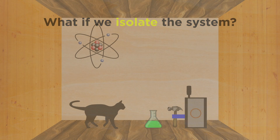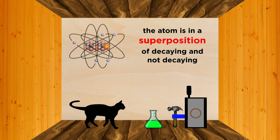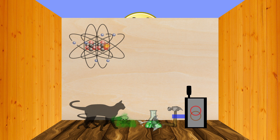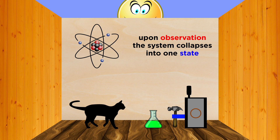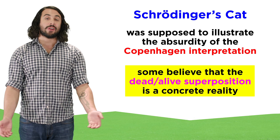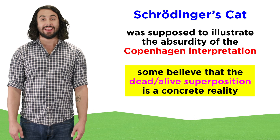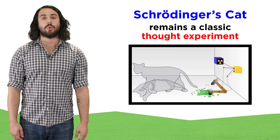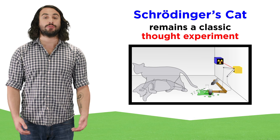The problem arises when we isolate this system from observation. According to the Copenhagen interpretation, the atom is in a superposition of decaying and not decaying, which seems pretty abstract and harmless, but because of the mechanism in the box, that means that the cat must be in a superposition of dead and alive. Only once you open the box and look inside will you observe the cat as being one or the other. Schrödinger meant for this paradox to discredit the Copenhagen interpretation, but there are many camps that believe that this dead-alive superposition is a concrete reality. This thought experiment remains a classic, and it is frequently referred to when comparing different interpretations of quantum mechanics.